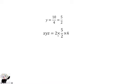And so we are going to get 2 multiplied by 5 divided by 2 multiplied by 4. So 2 will cancel this 2. Then we are going to get 5 multiplied by 4 which is 20.